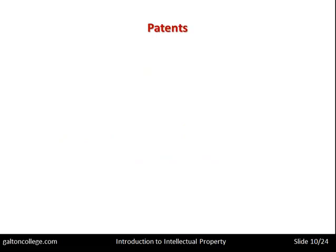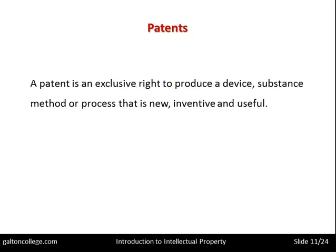There are also patents. Patents are protection on inventions, methods of working, or particular innovations. A patent is an exclusive right to produce a device, a substance, a method or process that is new, inventive and useful. A patent applies to something that's new — perhaps a component, an electronic configuration of chips and various components within something which enables it to do a particular task. Some way of engineering something that nobody has done before could be patented.